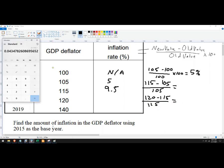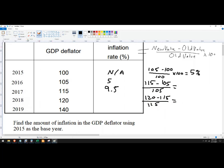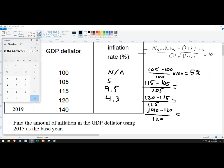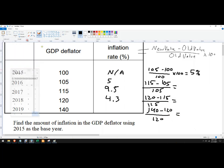And then 140 minus 120 over 120. That's 20 over 120, that's one sixth. I get 16 point, or 16 and two-thirds, 16.67 percent.